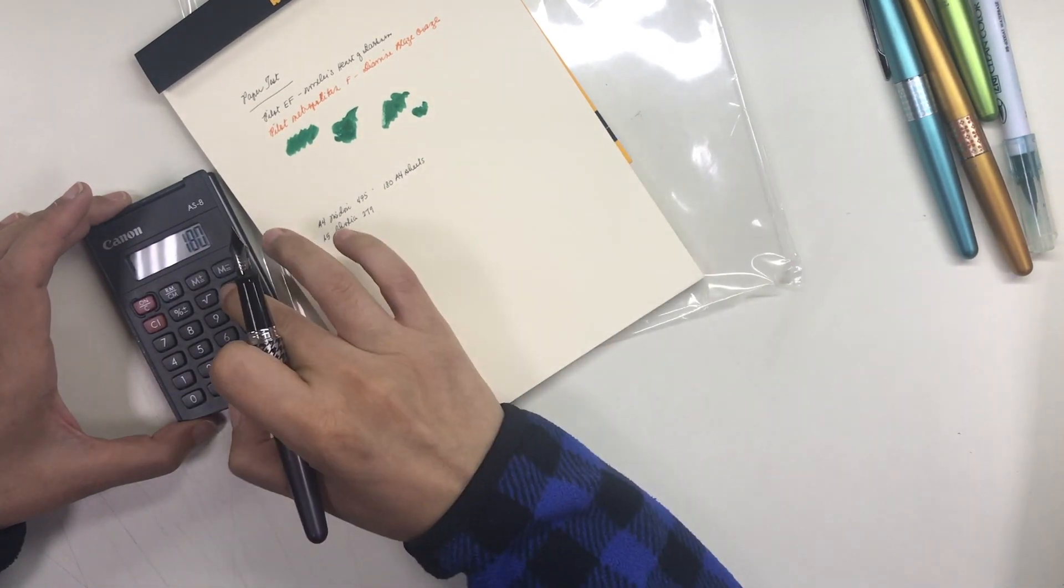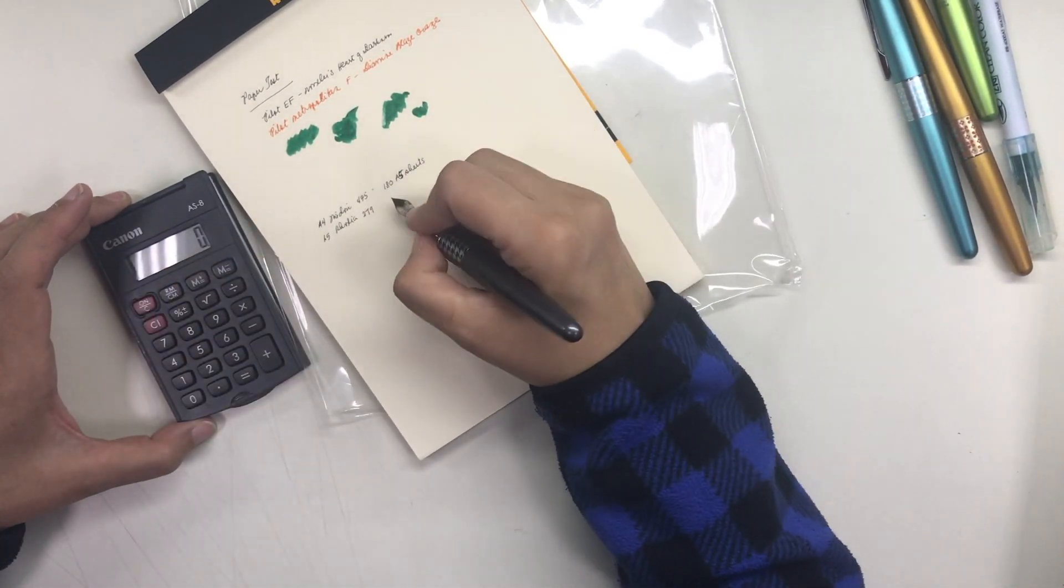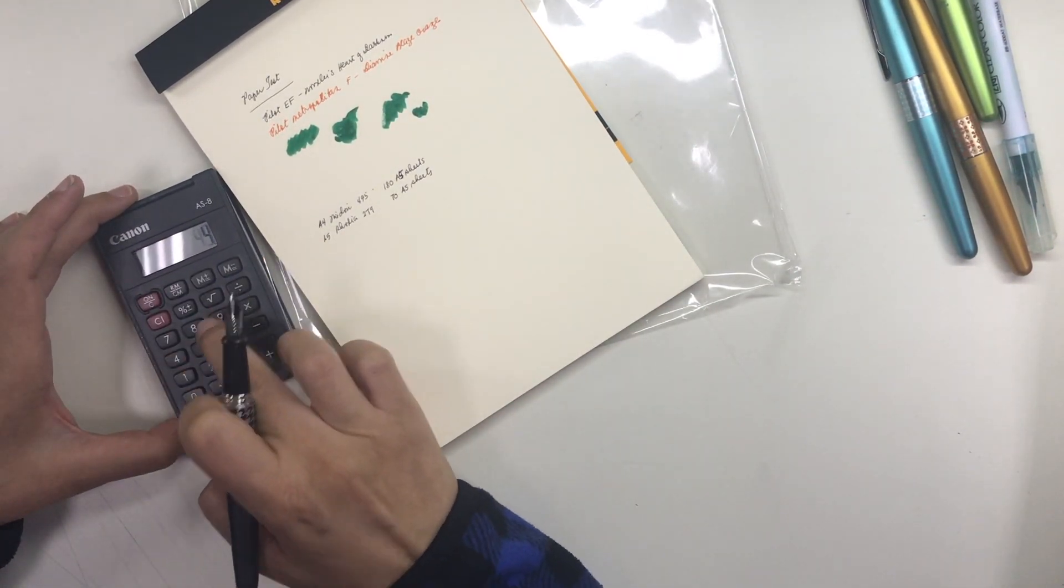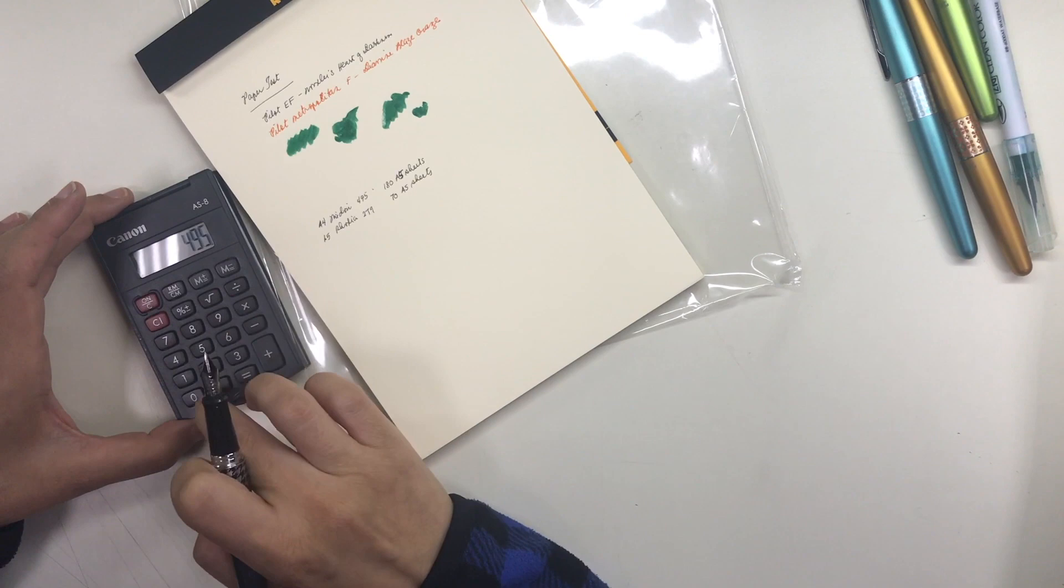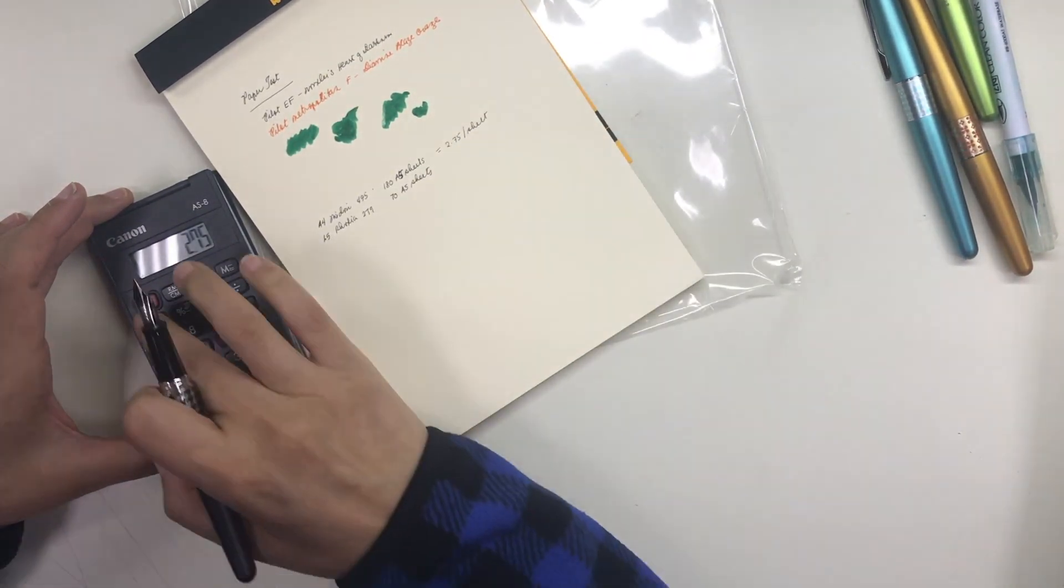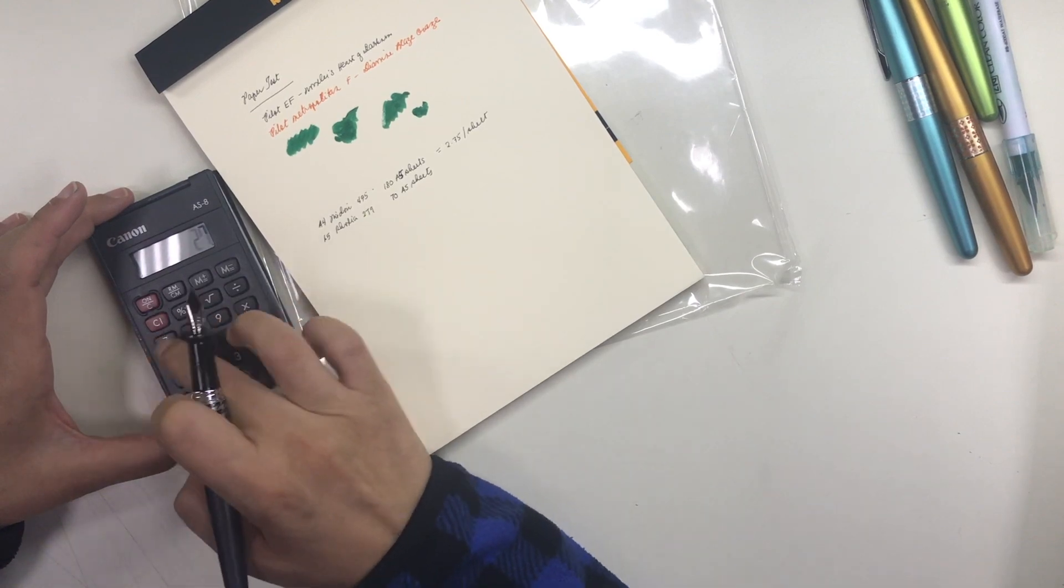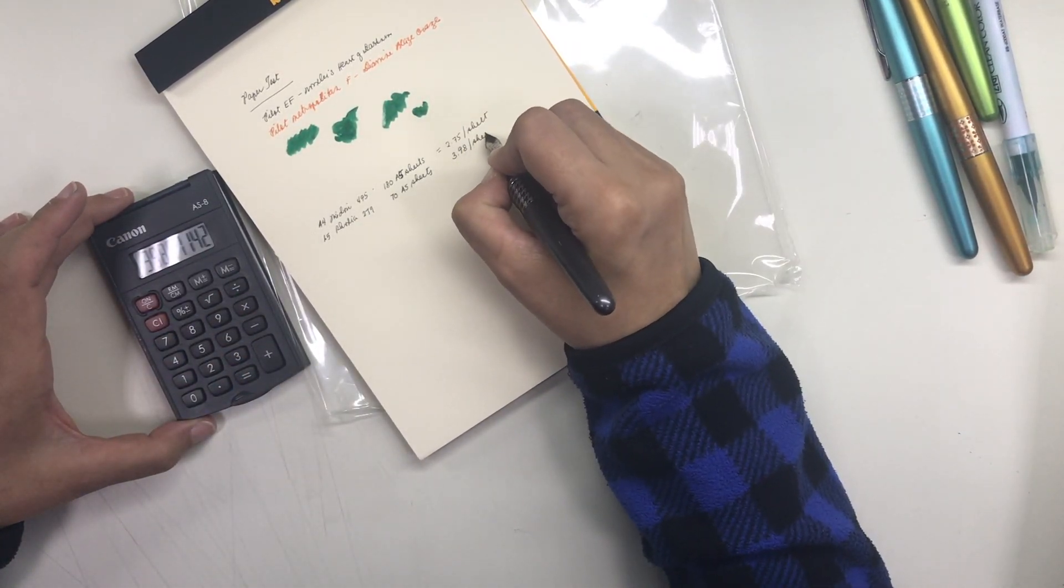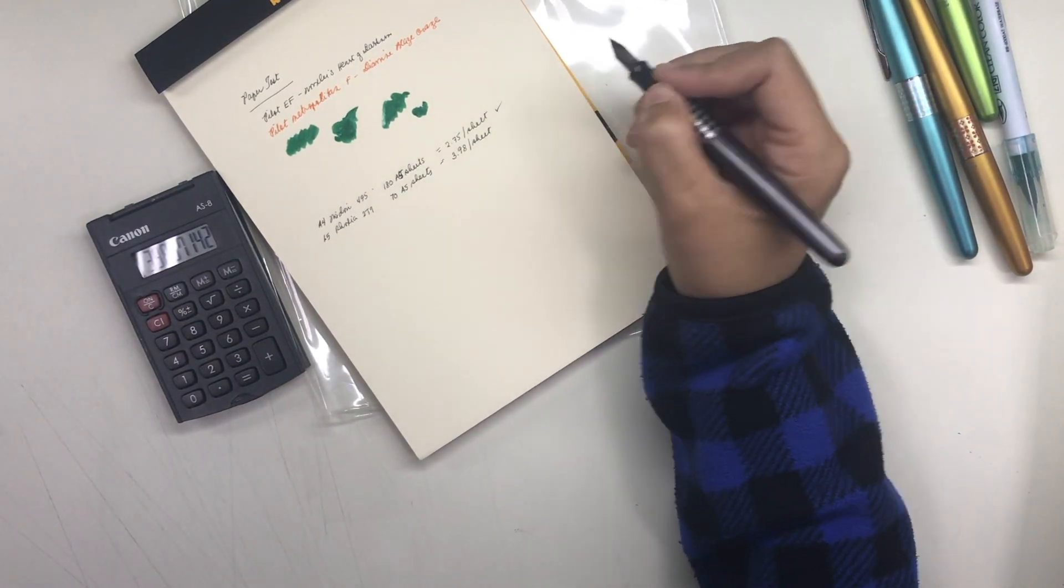On the other hand the Rodia cost 279 pesos and can make 70 A5 sheets which comes down to 3 pesos and 98 centavos per sheet. It is much cheaper to go with a Midori MD paper pad in A4 than the Rodia A5 pad that I already have.